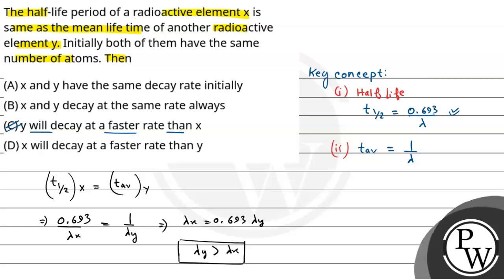So the correct option here is C. Option A says X and Y have the same decay rate initially — that is wrong. Option B says X and Y decay at the same rate always — that is also wrong. Option D says X will decay at a faster rate than Y — that is also incorrect. So option number C is the correct answer. Okay, understand it. Best of luck, let's go!